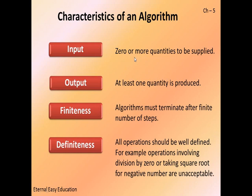Input: zero or more quantities to be supplied. For example, at minimum I need two inputs — two inputs for an addition process. So the number of inputs is important; sometimes zero, sometimes more quantities. Output characteristic: at least one quantity should be produced.